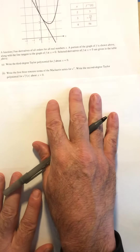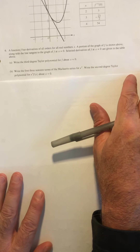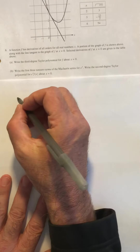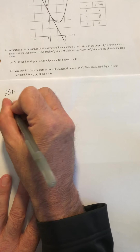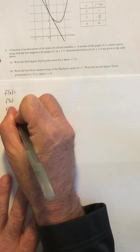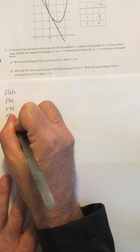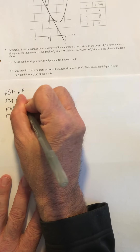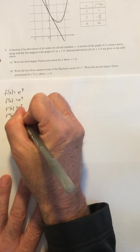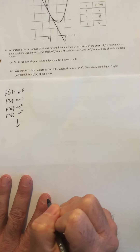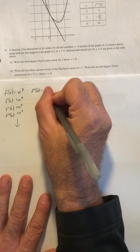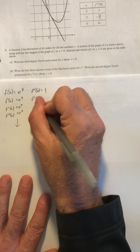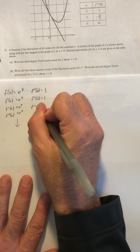Part B says: write the first three nonzero terms for the McLaurin series for e to the x. This is a start-from-scratch problem, but it's actually pretty easy to generate these because e has some unique derivatives. If the function is e^x, the first derivative is e^x, the second derivative is e^x, the third derivative is e^x — in fact, every derivative is itself. When I look at those at zero, I'm going to get e to the zero, which is one. So f double prime at zero is also one, and f triple prime at zero is also one.